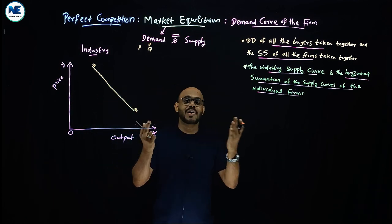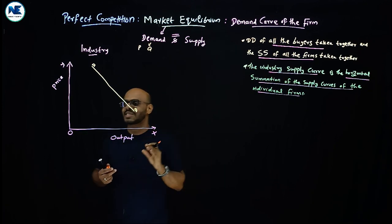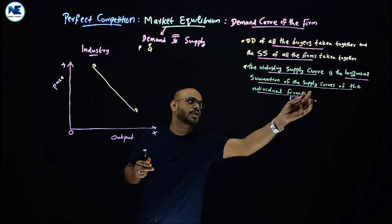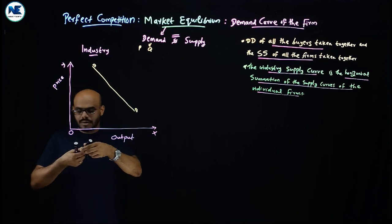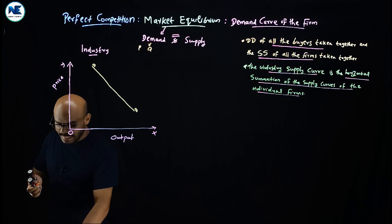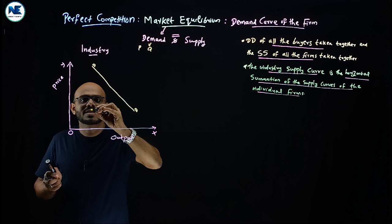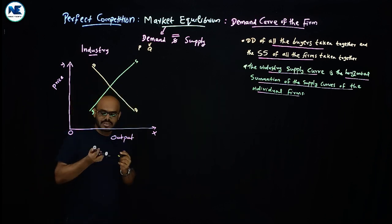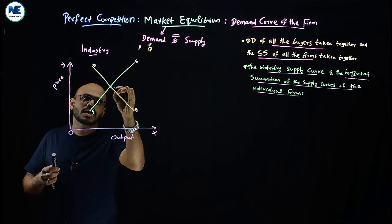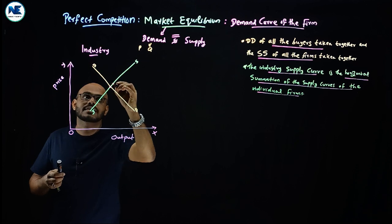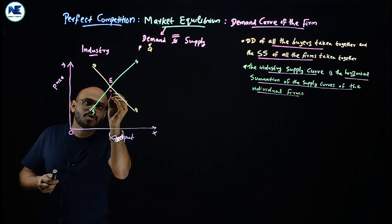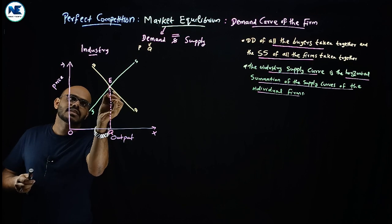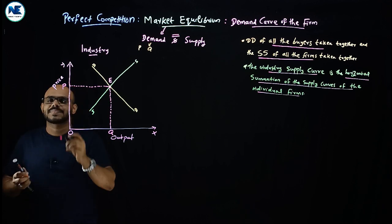The downward sloping demand curve represents the law of demand, which we already know. Now, the supply curve — the industry supply curve, which is the horizontal summation of the supply curves of individual firms — is upward sloping. So we have a downward sloping demand curve and an upward sloping supply curve. The equilibrium position is where demand equals supply; they intersect at point E. At that point, we can read off the equilibrium quantity Q and the equilibrium price P.